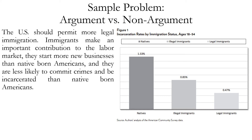Another sample problem: The U.S. should permit more legal immigration. Immigrants make an important contribution to the labor market. They start more new businesses than native-born Americans, and they are less likely to commit crimes and be incarcerated than native-born Americans. Is this an argument or not? The answer is yes — it is an argument. It does not include a conclusion or premise indicator word, but the first sentence is the conclusion and the remaining sentences give reasons in support of that conclusion, so it counts as a logical argument.